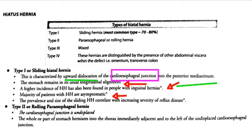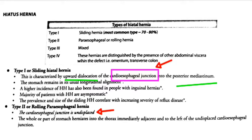The severity of reflux disease depends upon the size of the hiatal hernia. In type 2, also known as rolling or paraesophageal hernia, the cardio-esophageal junction is undisplaced — unlike type 1 where there was upward dislocation. Since the cardio-esophageal junction is involved in type 1, there will be reflux disease, but reflux disease will be uncommon in type 2. In type 2, a part or whole of the stomach herniates into the thorax immediately adjacent to and to the left of the undisplaced cardio-esophageal junction.